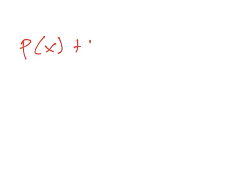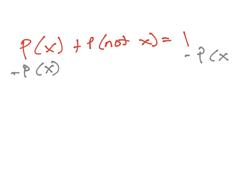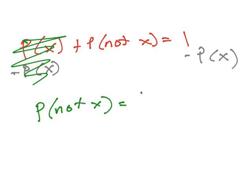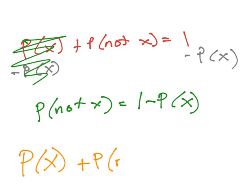We can also say, if P(X) plus P(not X) equals 1, well if I subtract P(X) from both sides, these go away, and I'm left with P(not X) equals 1 minus P(X). We can do a lot just knowing that the probability of an event plus the complement of that, which is the probability of not X, equals 1.